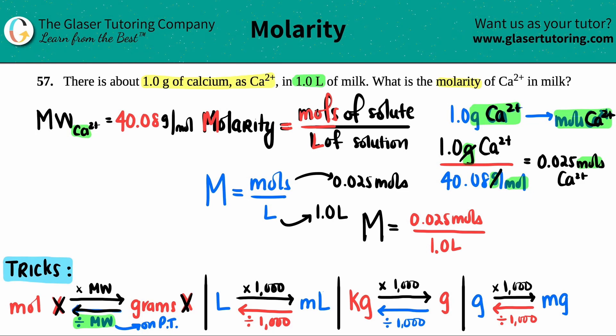Anything divided by one is the same number, so this would be 0.025. Capital M is the correct unit for molarity, but more specifically, since there was a mole unit on the top and a liter unit on the bottom and these can't cancel, you have to keep them in your answer. So it would be 0.025 moles per liter.